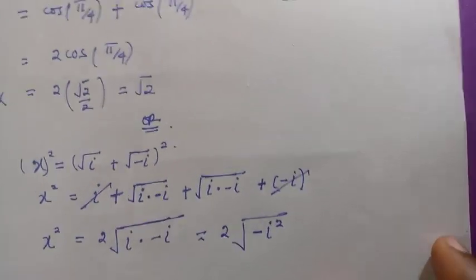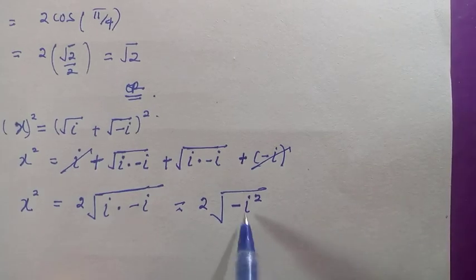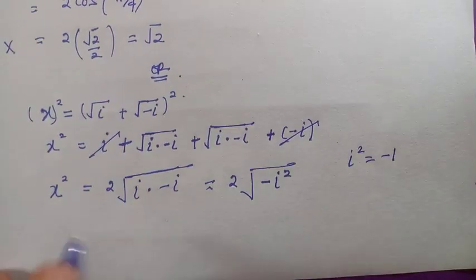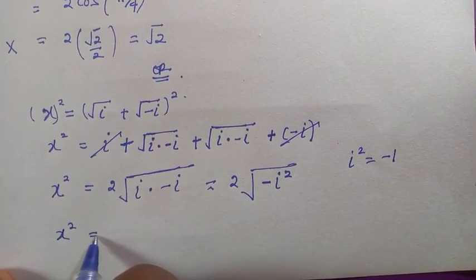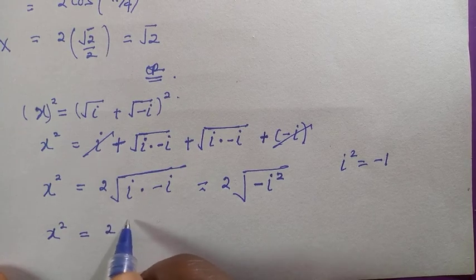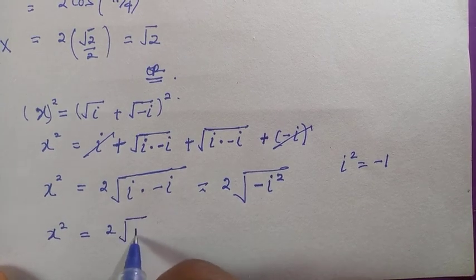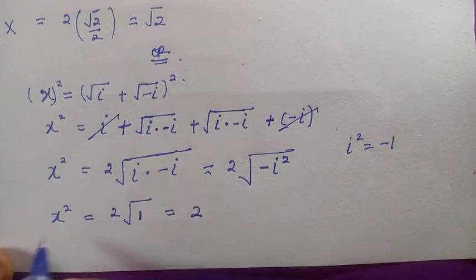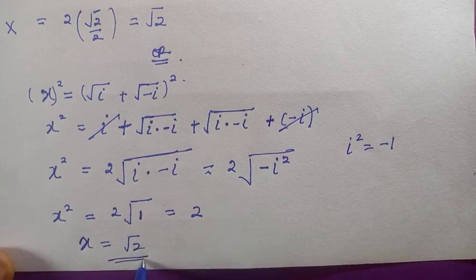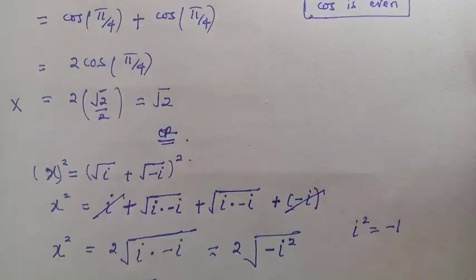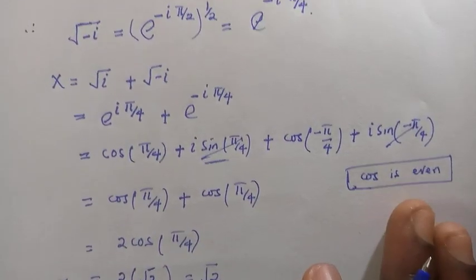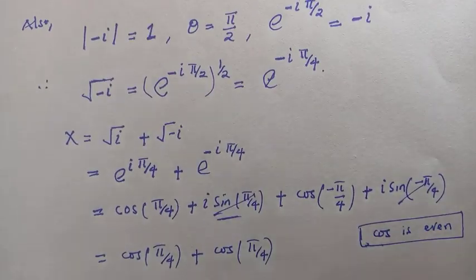Since i² = -1, we replace it: x² = 2·√1 = 2. Therefore x = √2, which confirms our earlier solution. Thanks for watching — please subscribe to the channel and like this video. Bye!